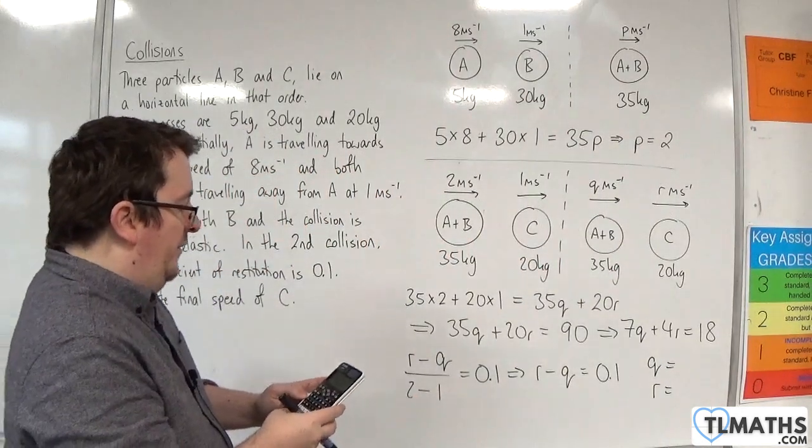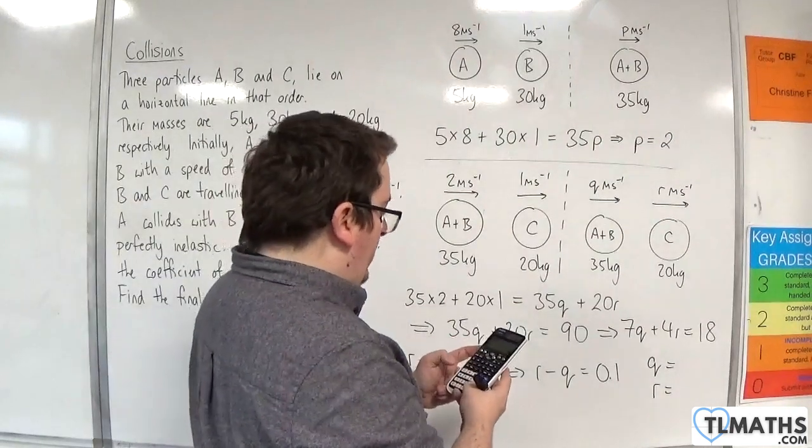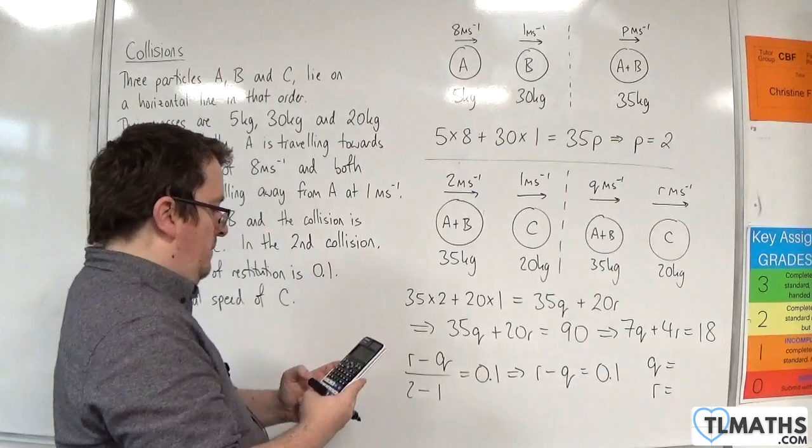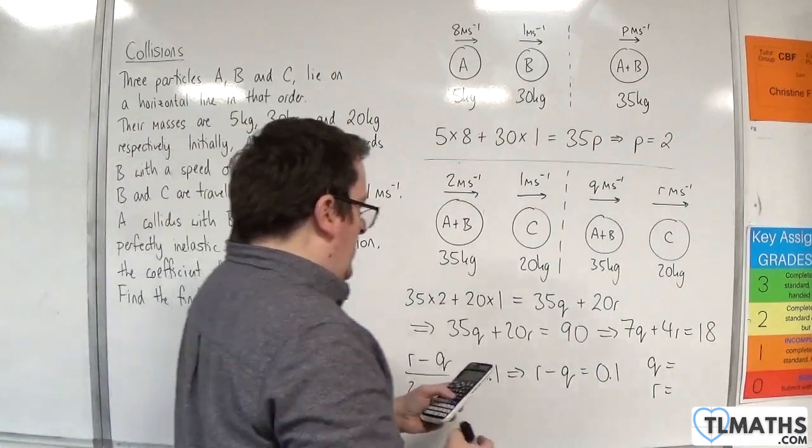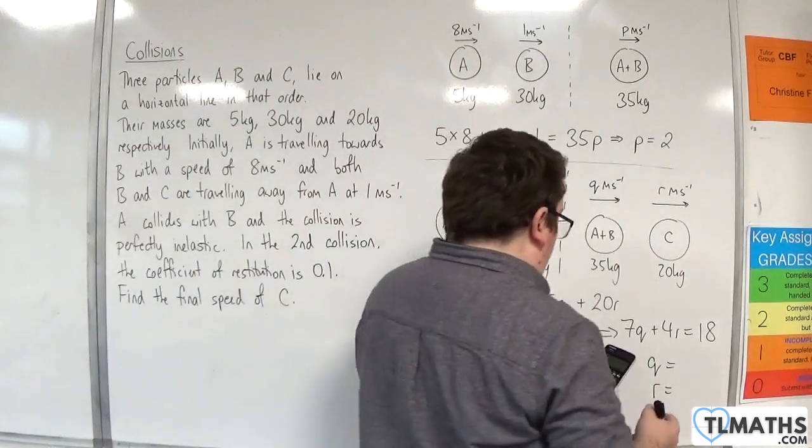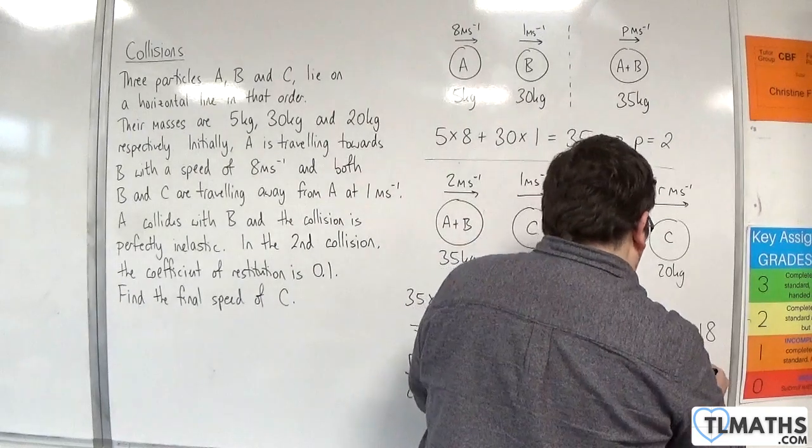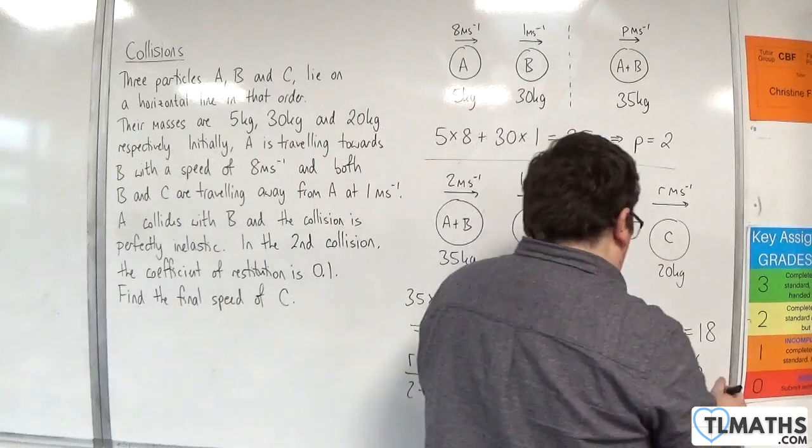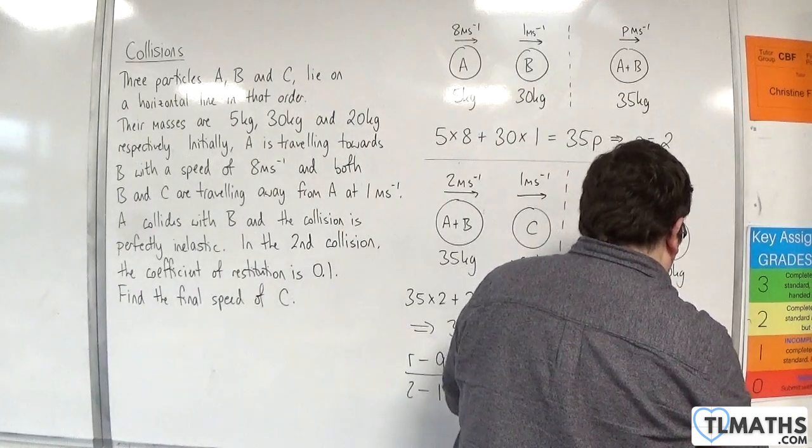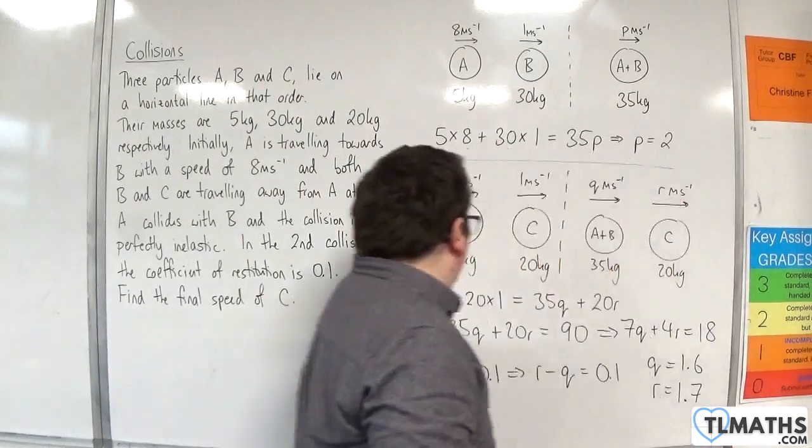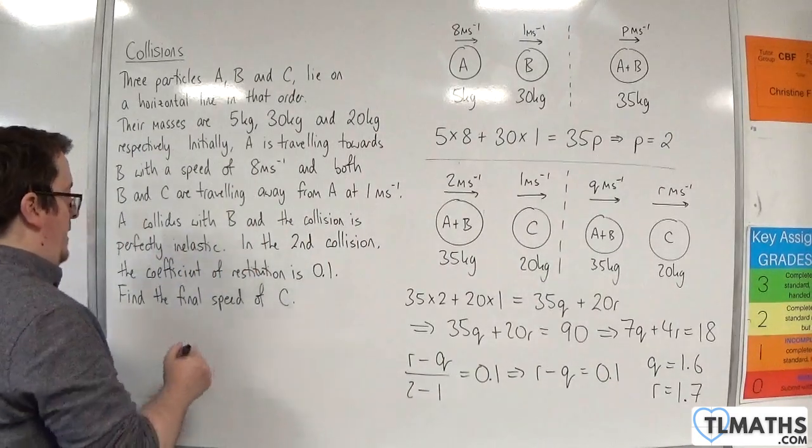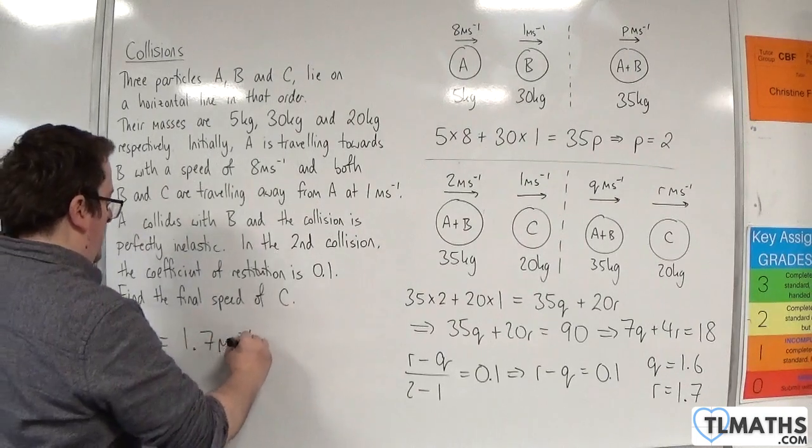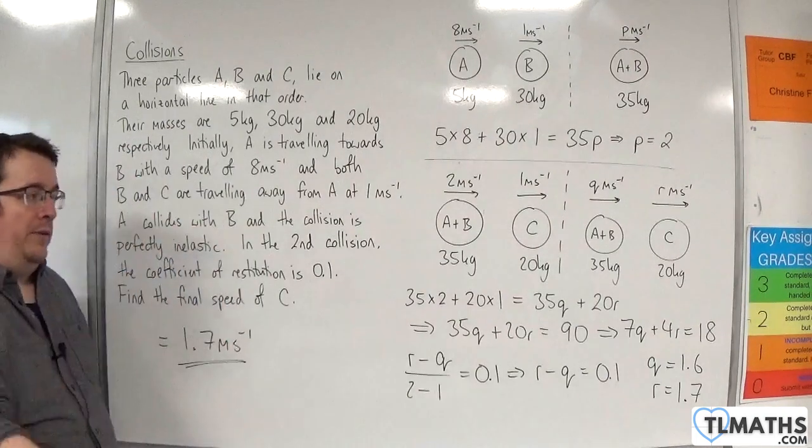I'm going to put these into the simultaneous equation solver: 7, 4, 18 minus 1, 1, 0.1. And we get 8 fifths for Q, so 1.6 and 17 tenths, so 1.7 for R. What we wanted was the final speed of C, and that's equal to 1.7 metres per second.